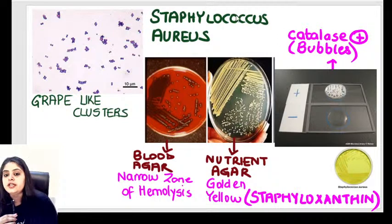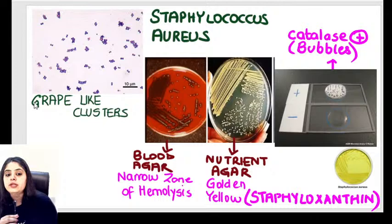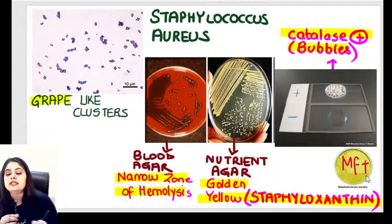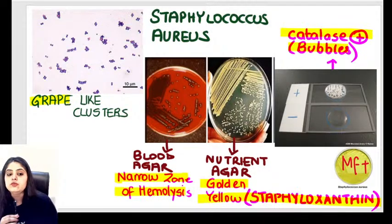When mannitol fermentation occurs, a yellow color is produced — that's the bright yellow you see. Staphylococcus aureus is famous for fermenting mannitol. Summary: MSA is selective because of salt, and differential because of mannitol.